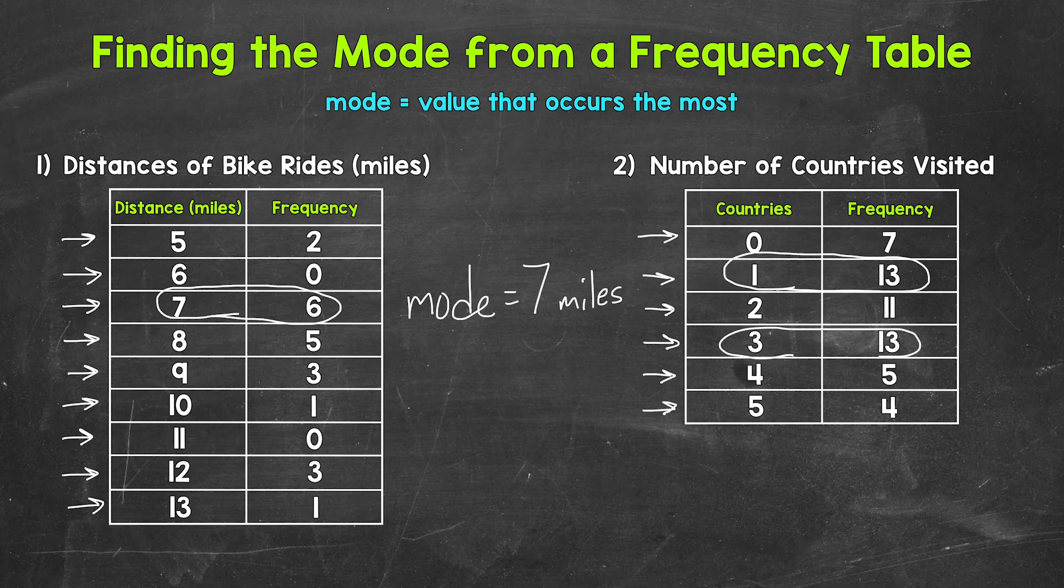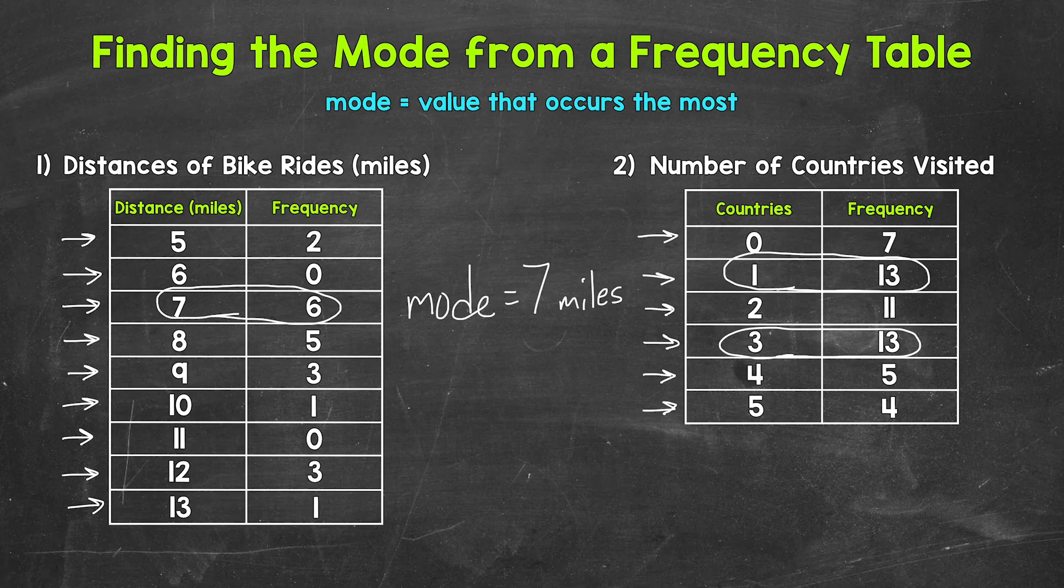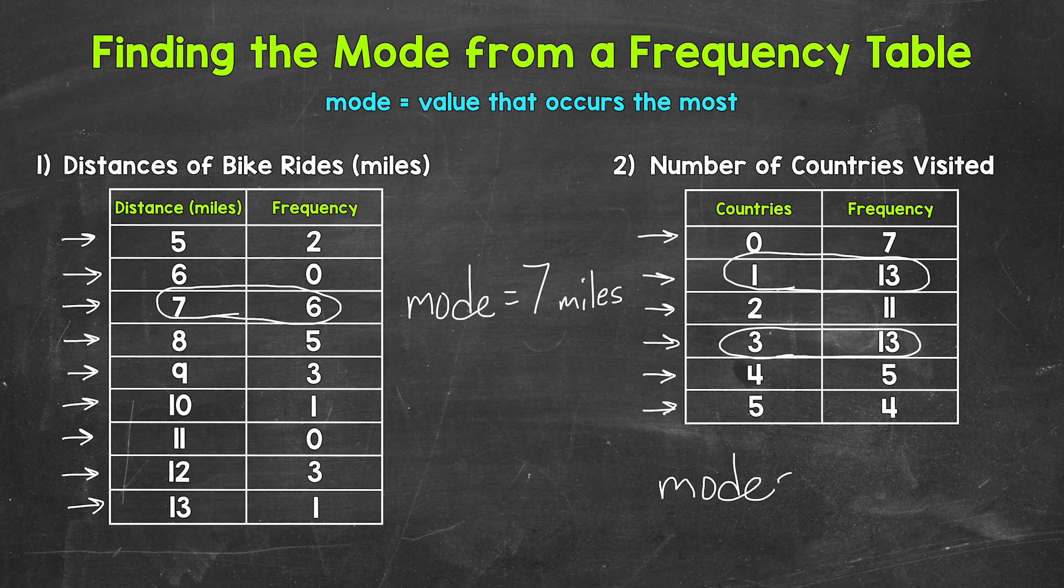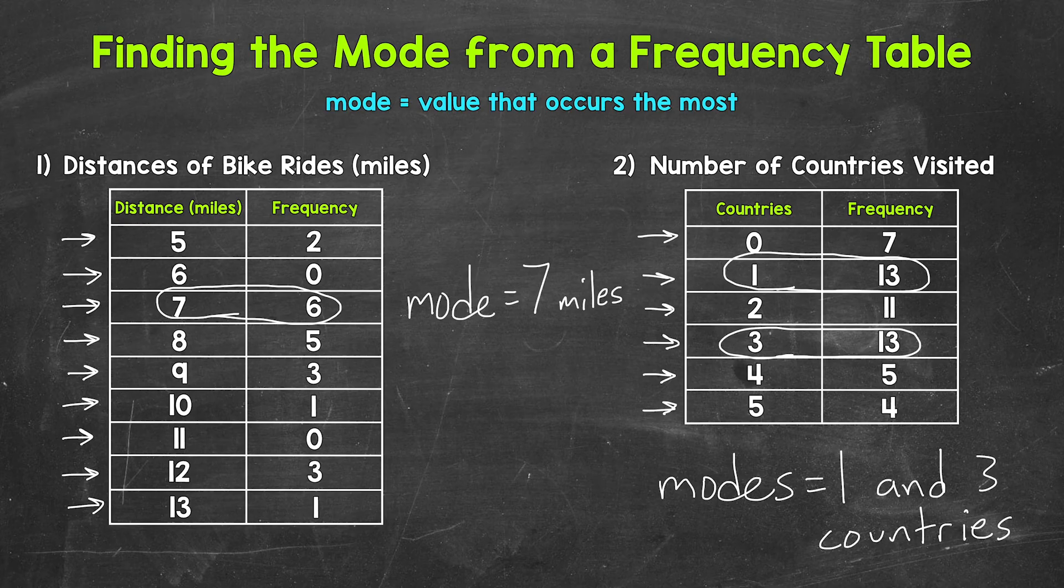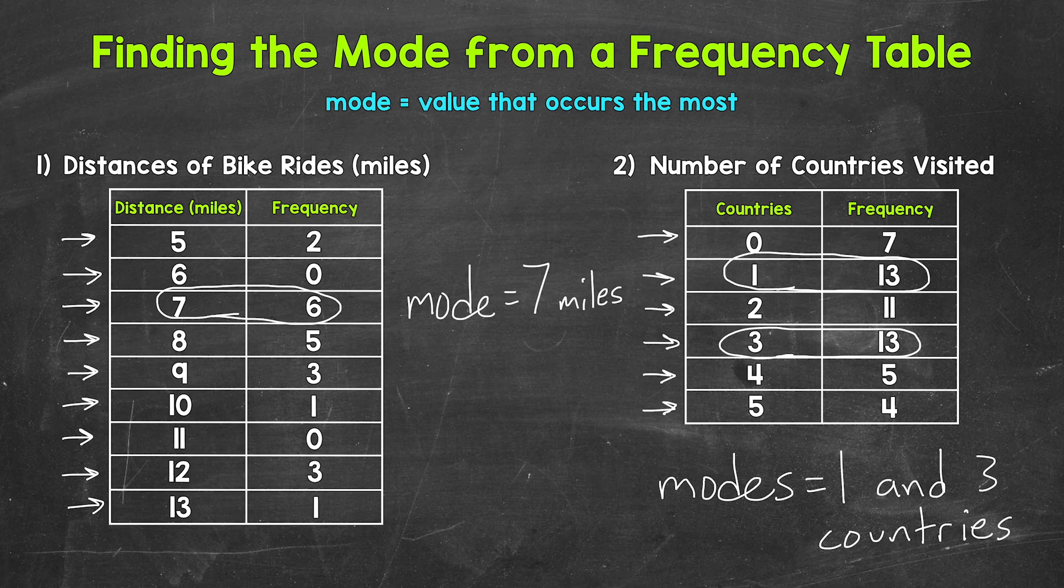And 3 countries occurred 13 times. So those 2 values occurred the most. So we have 2 modes here. Our modes are 1 and 3 countries. So 1 and 3 countries visited occurred the most. So if the dataset works out to where there is more than one mode, that's perfectly okay.